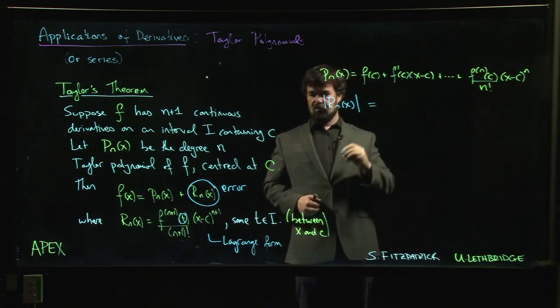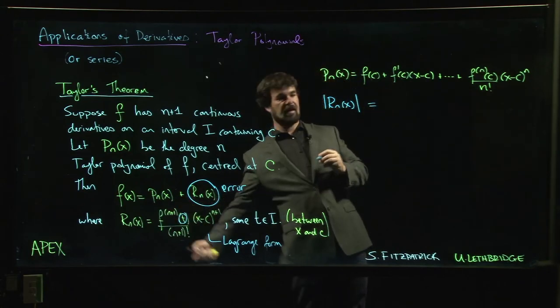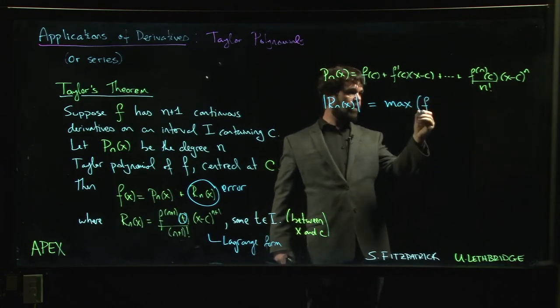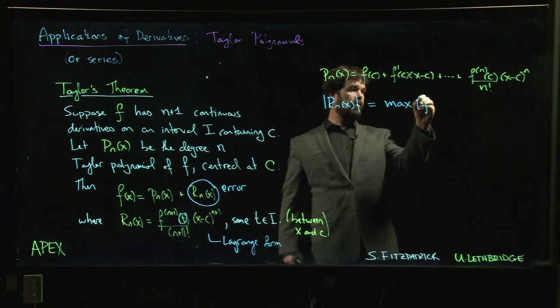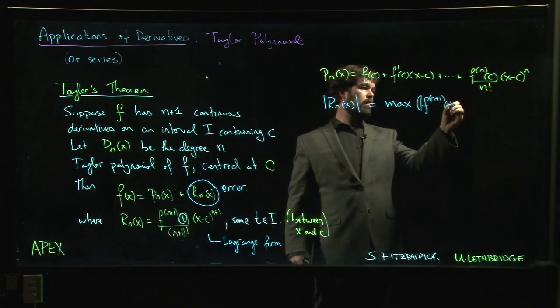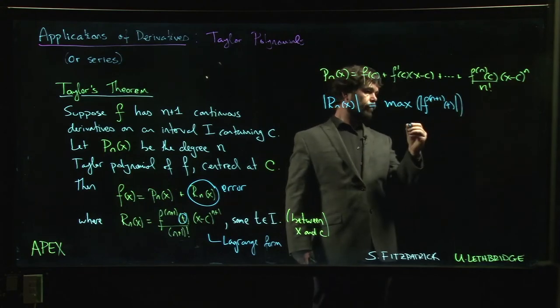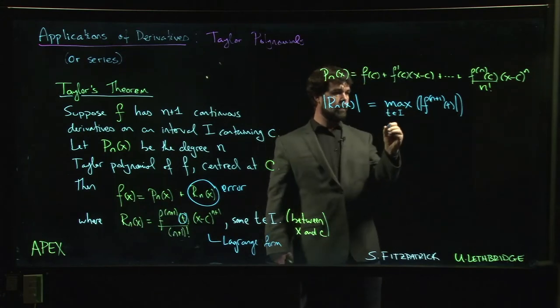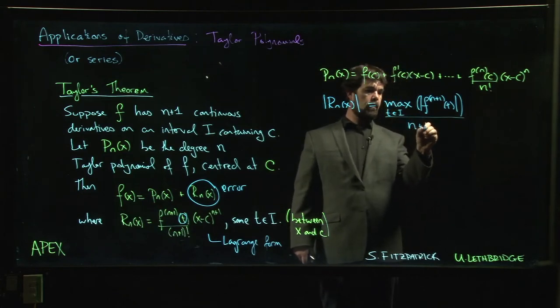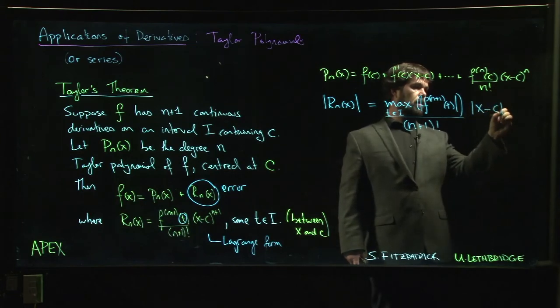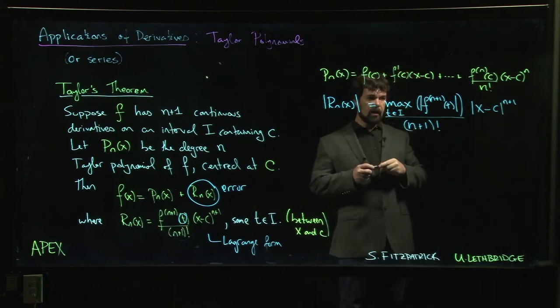Typically what you want to do is look for what is the biggest value that I can get for this function. We want the absolute value of this derivative over this interval I, divide by (n+1) factorial, and multiply by the absolute value of (x-C) taken to the (n+1) power.